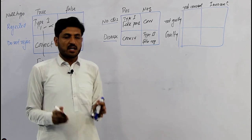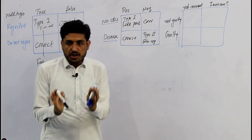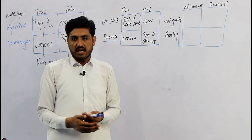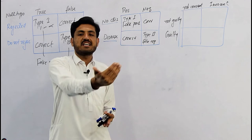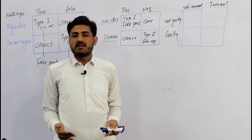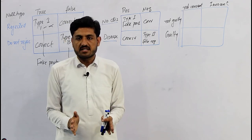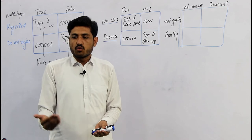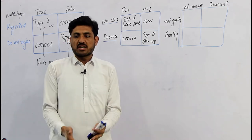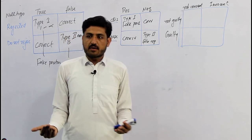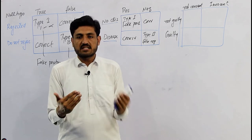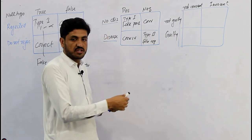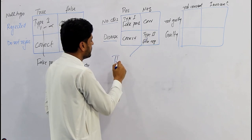اس condition میں کونسا error زیادہ dangerous ہے؟ اگر کسی کو COVID نہیں ہے اور positive آتا ہے تو وہ quarantine ہو جائے گا یا احتیاطی تدابیر کرے گا — یہ Type 1 error اتنا dangerous نہیں۔ لیکن اگر کسی کو COVID ہے اور screening negative آتی ہے، تو وہ سوچے گا مجھے COVID نہیں ہے، لوگوں سے ملے گا، disease spread کرے گا، اور احتیاط نہ کرنے کی وجہ سے اس کی صحت worse ہو جائے گی۔ اس condition میں Type 2 error زیادہ dangerous ہے۔